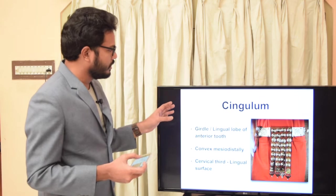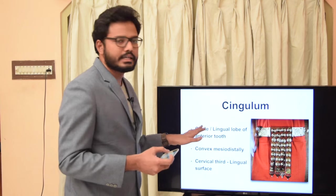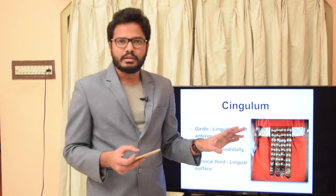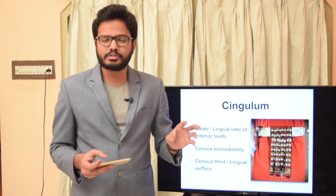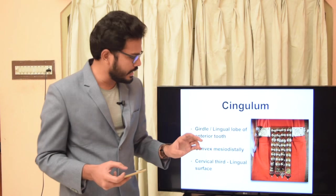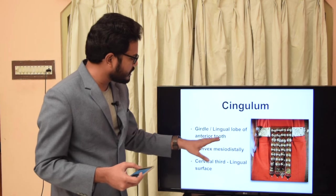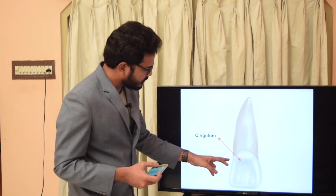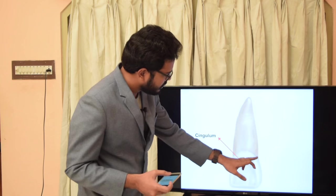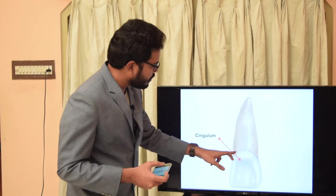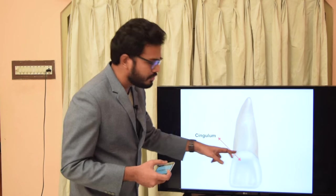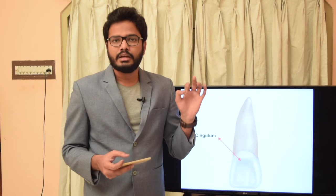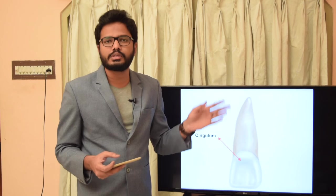The next term is cingulum, also called the girdle. A girdle is a belt-like structure, and similarly the cingulum represents a girdle present in the cervical third of the lingual aspect of anterior teeth, usually convex mesiodistally. On the lingual surface in the cervical third, we find a convex structure extending mesiodistally called the cingulum.